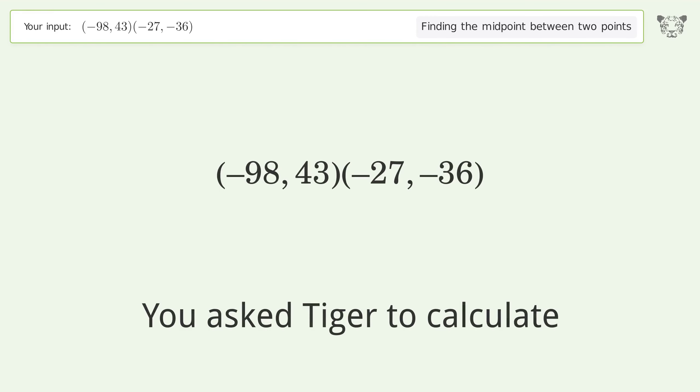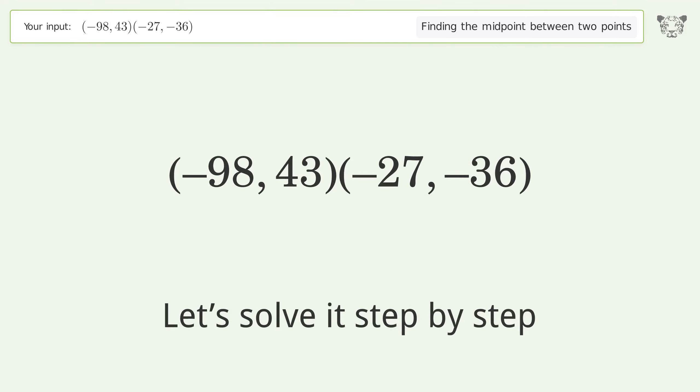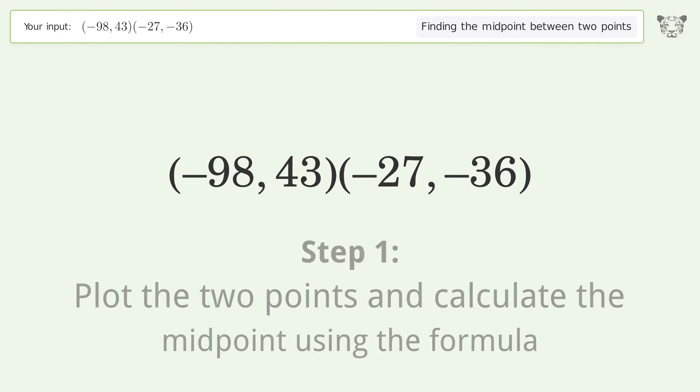You asked Tiger to calculate this. This deals with finding the midpoint between two points. The midpoint between the two points is negative 62.5, 3.5. Let's solve it step by step. Plot the two points and calculate the midpoint using the formula.